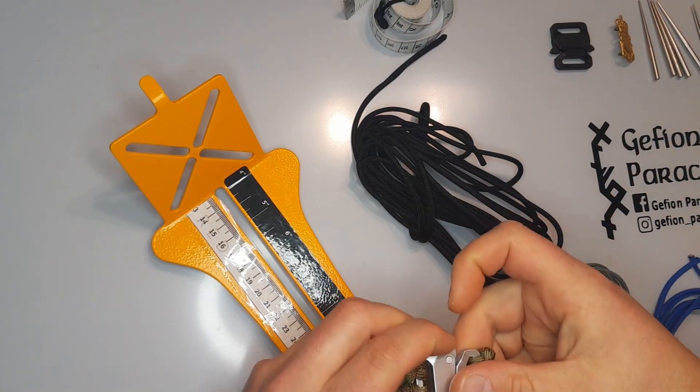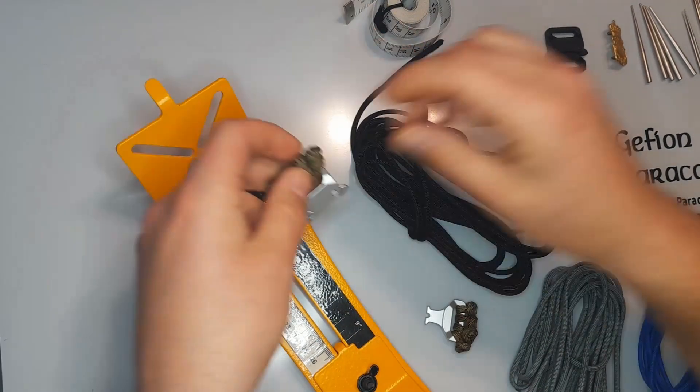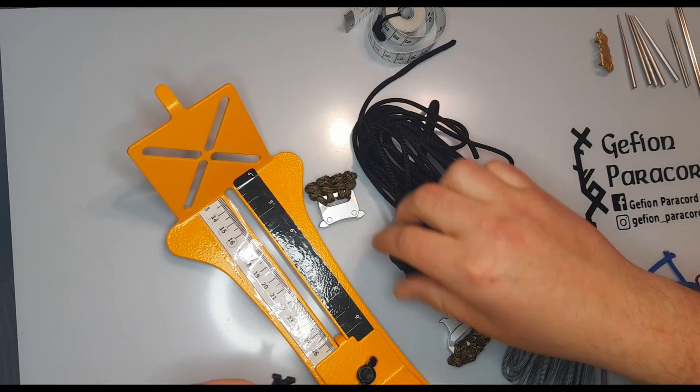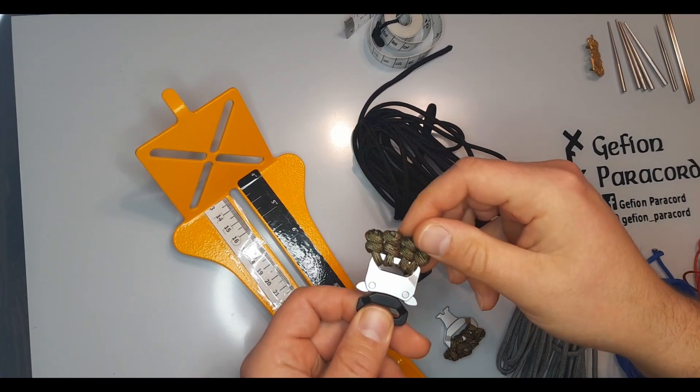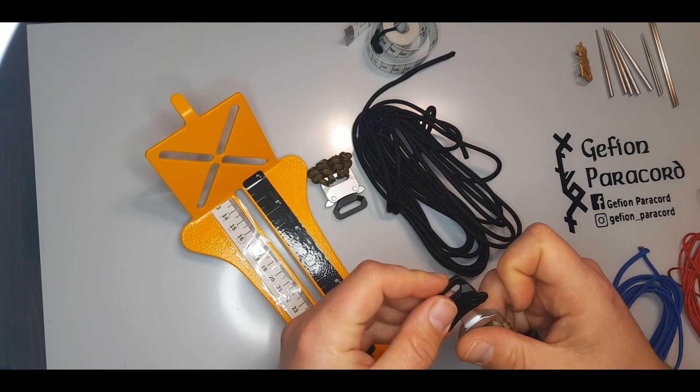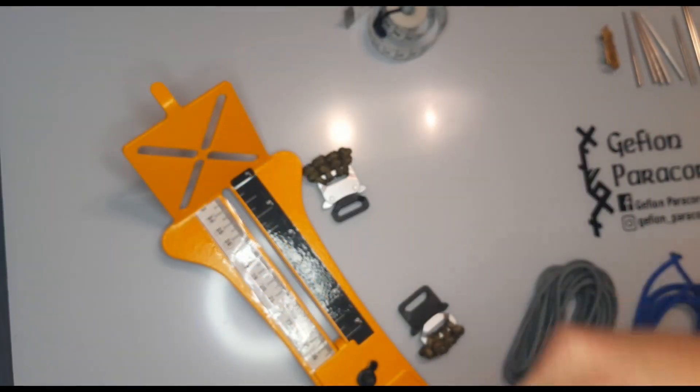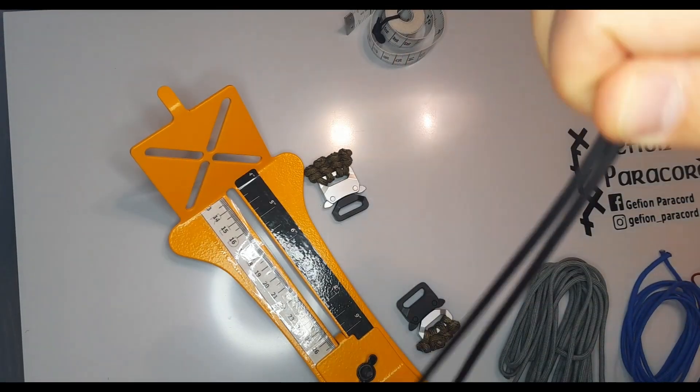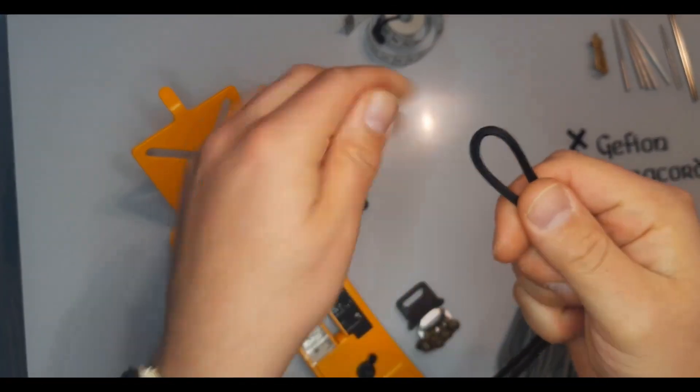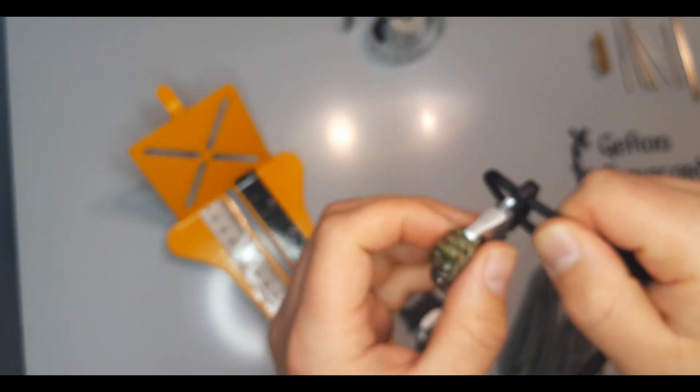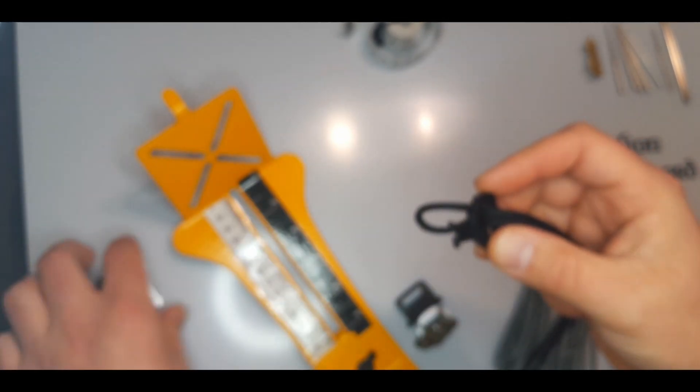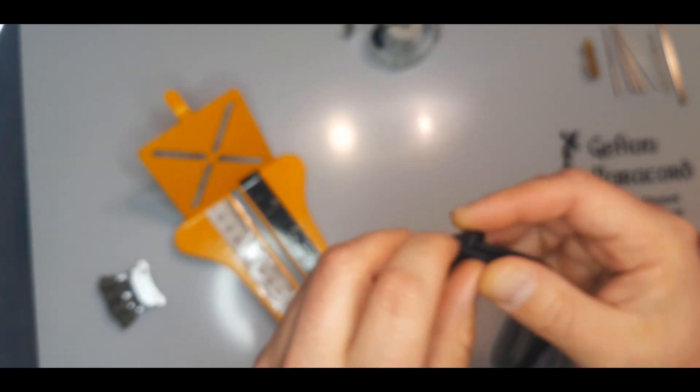I take my dummy side lock buckle and I connect it to the client's side lock buckle. Then I take the bite of the outer strand and I make a cow hitch.